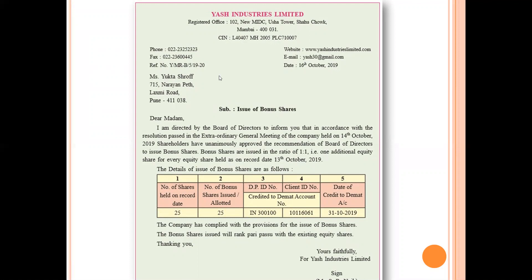The shareholder is Miss Yukta Shroff, her address is given, and the subject mentioned is 'Issue of Bonus Shares — Dear Madam.' The letter reads: 'I am directed by the board of directors to inform you that in accordance with the resolution passed in the Extraordinary General Meeting of the company held on 14th October 2019, shareholders have unanimously approved the recommendation of the board of directors to issue bonus shares in the ratio of 1:1 — that is, one additional equity share for every equity share held as on record date 13th October 2019.'